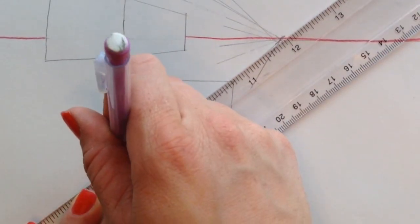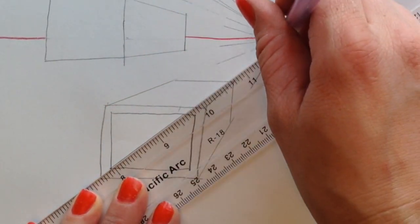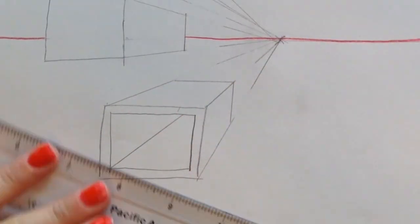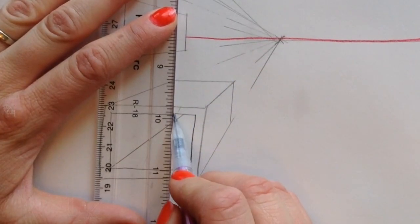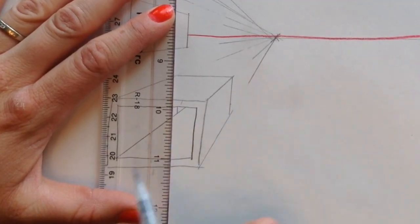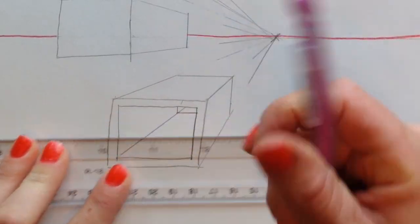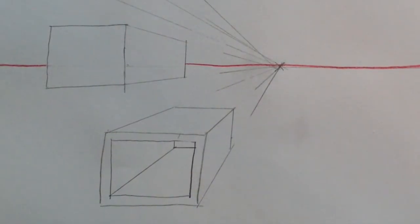You're going to bring this corner back to the vanishing point. This point would go through it and this point would go through it. We need to add this in here because we need to add a line that's parallel to that line. And then another horizontal line in here. Now we can kind of see through this box.